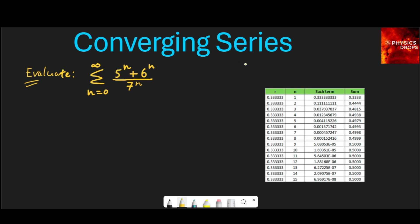Let us take a geometric series which is given by 1/3, which is 0.333 recurring, to the power 1 plus 0.333 to the power 2 plus 0.333 to the power 3 and so on.